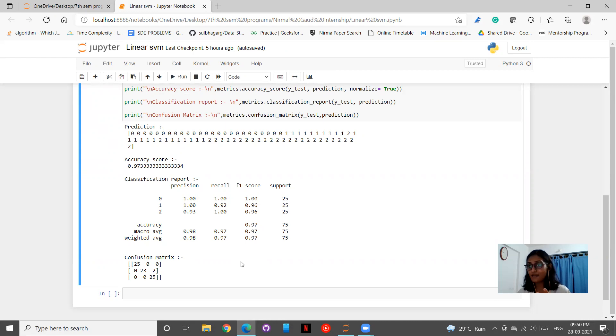Thereafter the second point in our process is that we choose the hyperplane so that distance from it to the support vectors on each side is maximized and if such a hyperplane exists it is known as maximum margin hyperplane and the linear classifier is known as the maximum margin classifier.